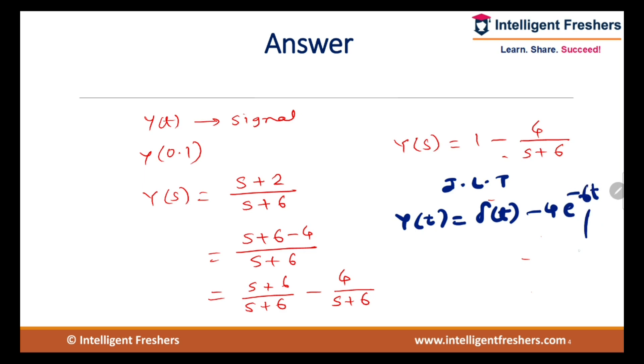And then substitute value of t equals 0.1 second. Now we know that δ(t) is nothing but impulse which is having ideal impulse t equals 0 only, it is having unity value. So for t equals 0.1 second, δ(0.1) minus 4e^(-0.6), which is equal to 0 minus 4e^(-0.6), which is equal to minus 2.19. So option b is correct.